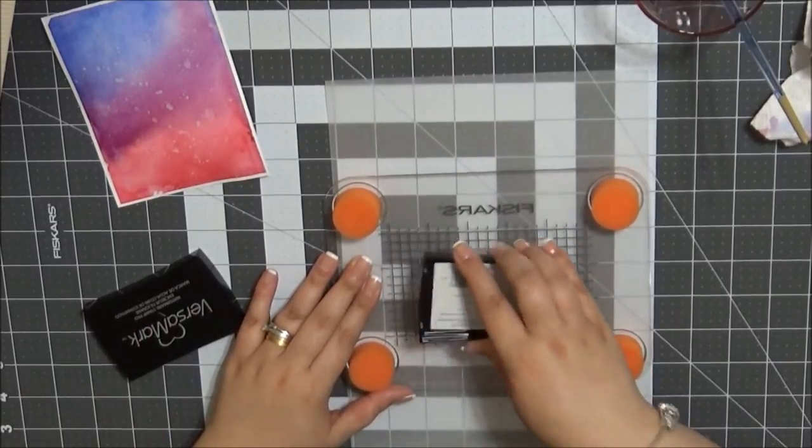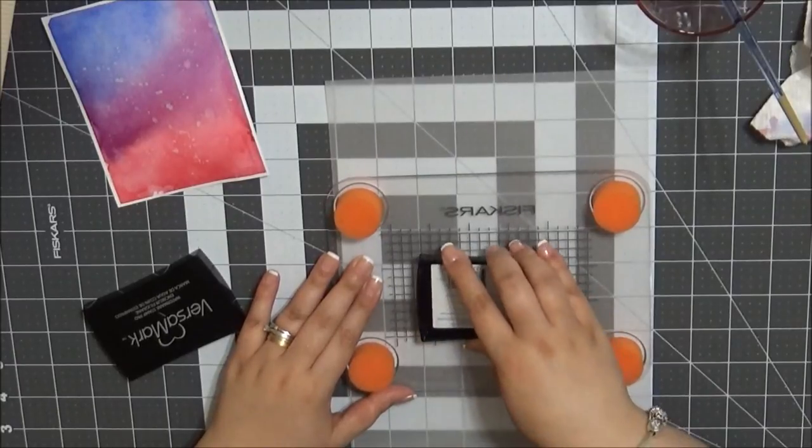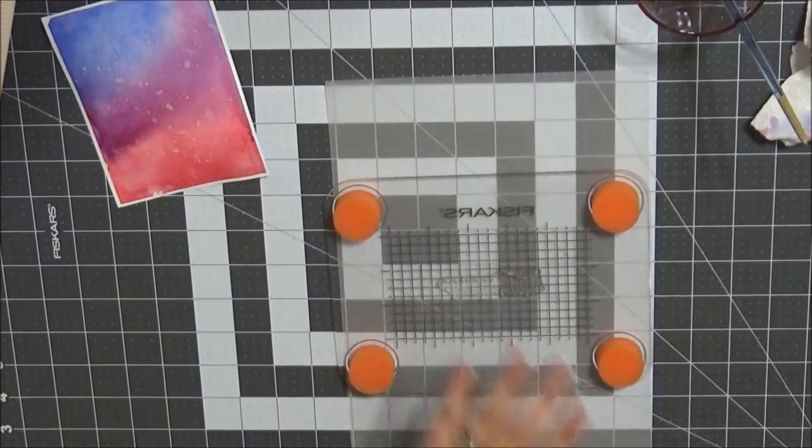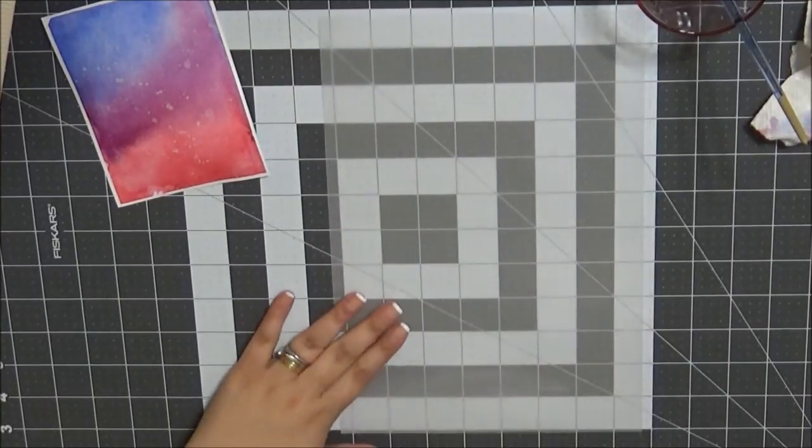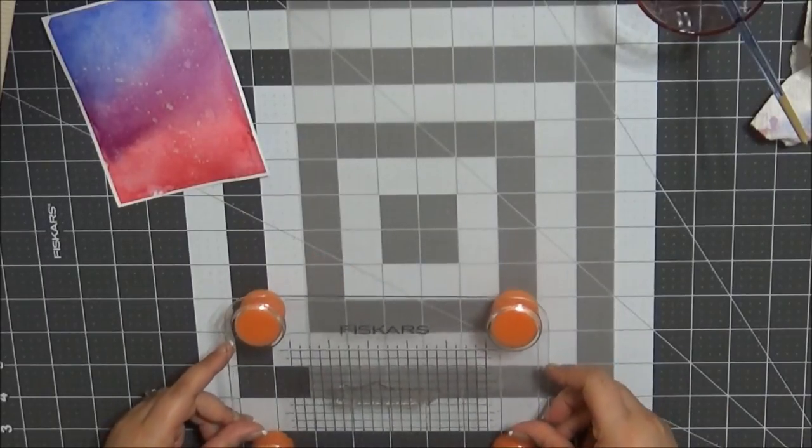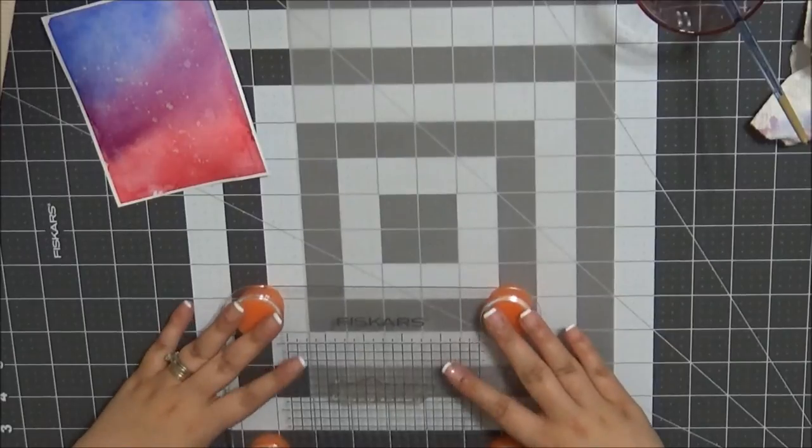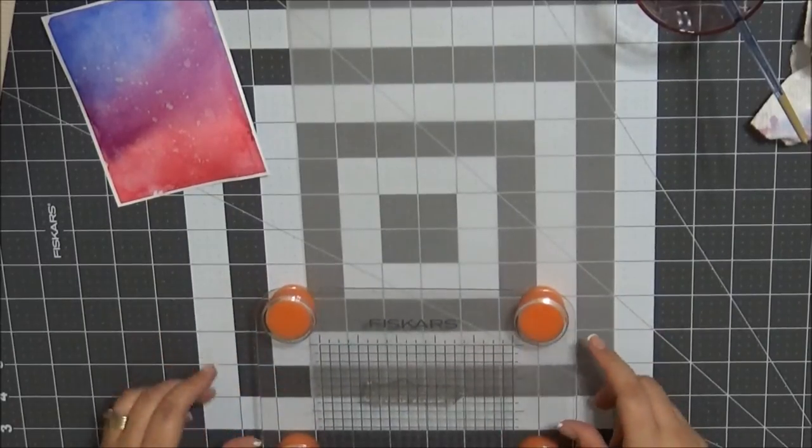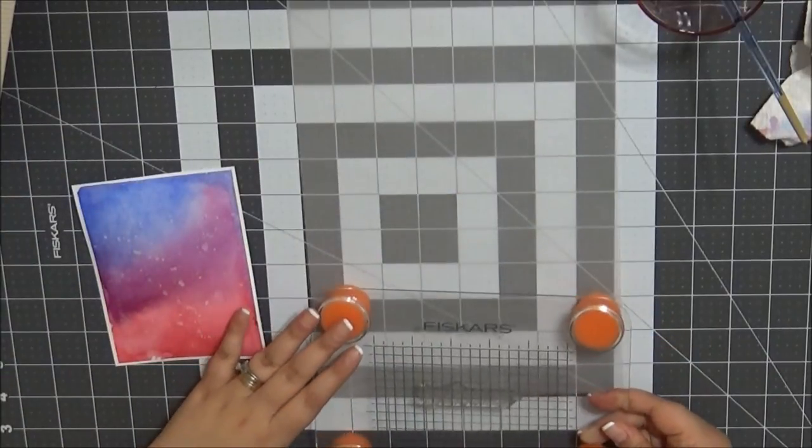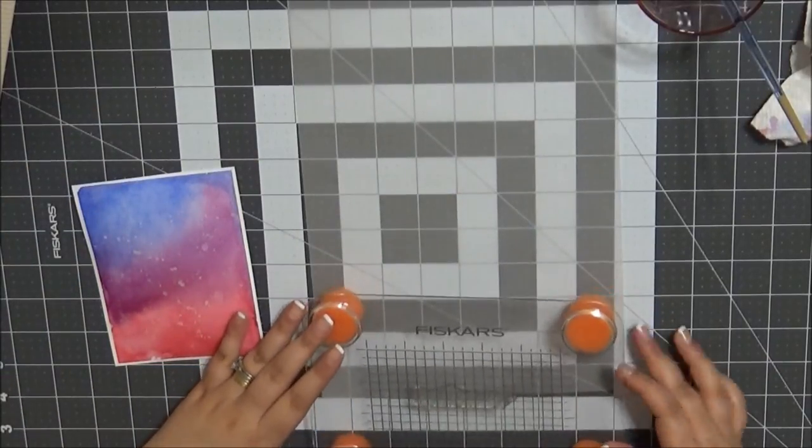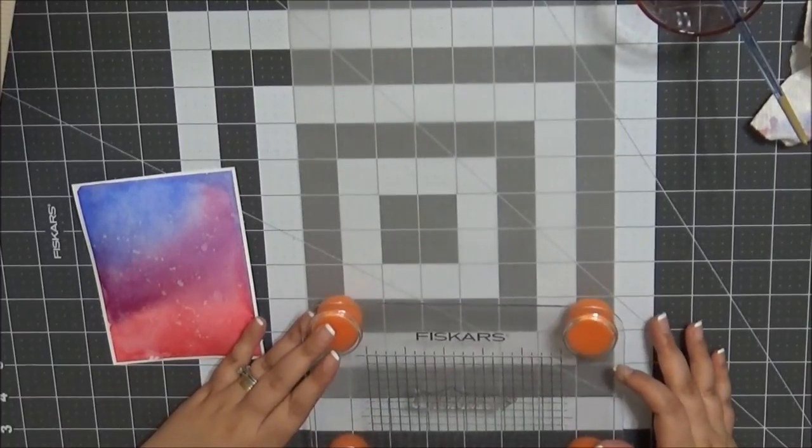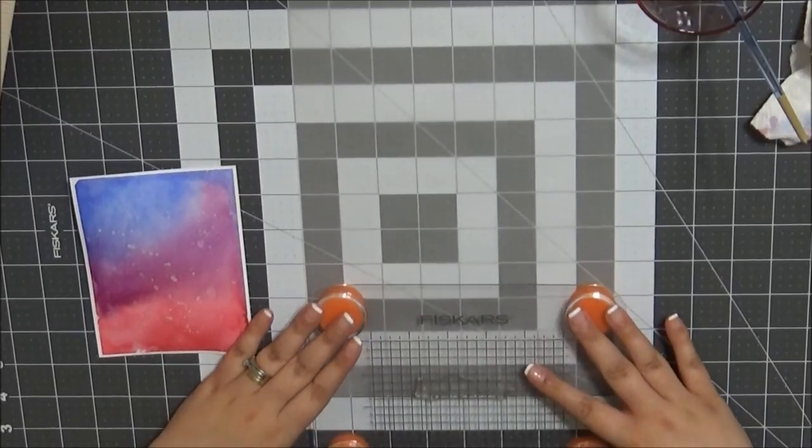This is a sticky ink that allows your embossing powder to stick to it so that you can heat it up. At first I was going to be going to the left hand side but then I realized I want my sentiment right in the middle of my card. So my press allows me to move my sentiment and get it precisely where I want it.